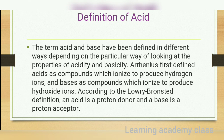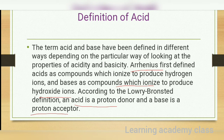The terms acid and base have been defined in different ways depending on how we look at the properties of acidity and basicity. Arrhenius first defined acids as compounds which ionize to produce hydrogen ions, and bases as compounds which ionize to produce hydroxide ions. According to the Brønsted-Lowry definition, an acid is a proton donor and a base is a proton acceptor.